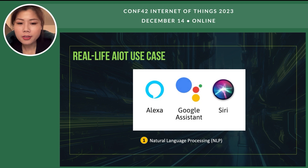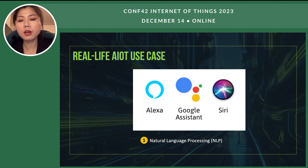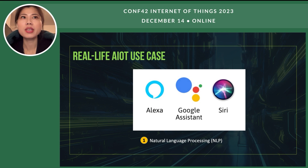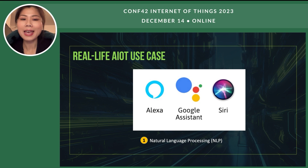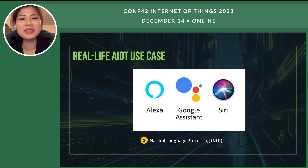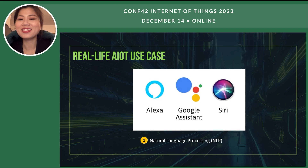Here I pick five use cases in real-life AIoT industry. For each part, for example NLP, it's a subfield of AI. AI has more than seven major subfields, but here I pick five to relate them to AIoT. The first use case: Alexa, Google Assistant, Siri.